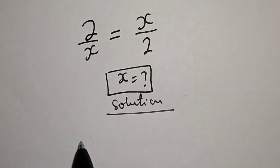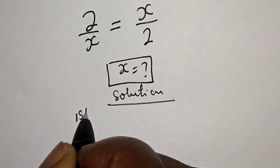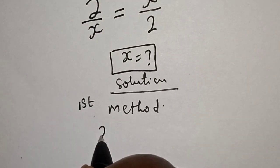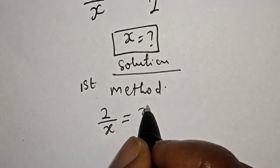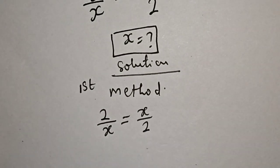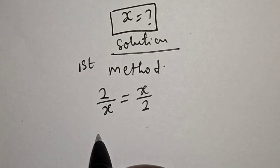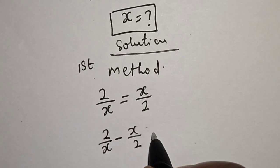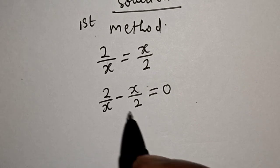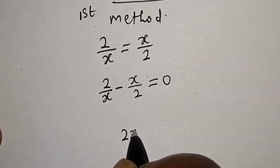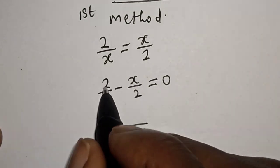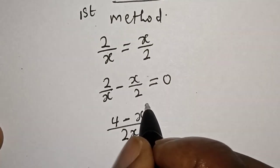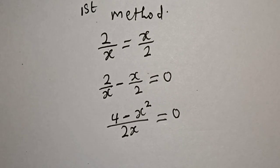We are going to solve this equation in two different ways. For the first method, we have 2 divided by x is equal to x divided by 2. Let's bring this to this side: 2 over x minus x over 2 is equal to 0. The LCD is 2x, giving us 2 times 2 (that is 4) minus x times x (that is x squared) is equal to 0.